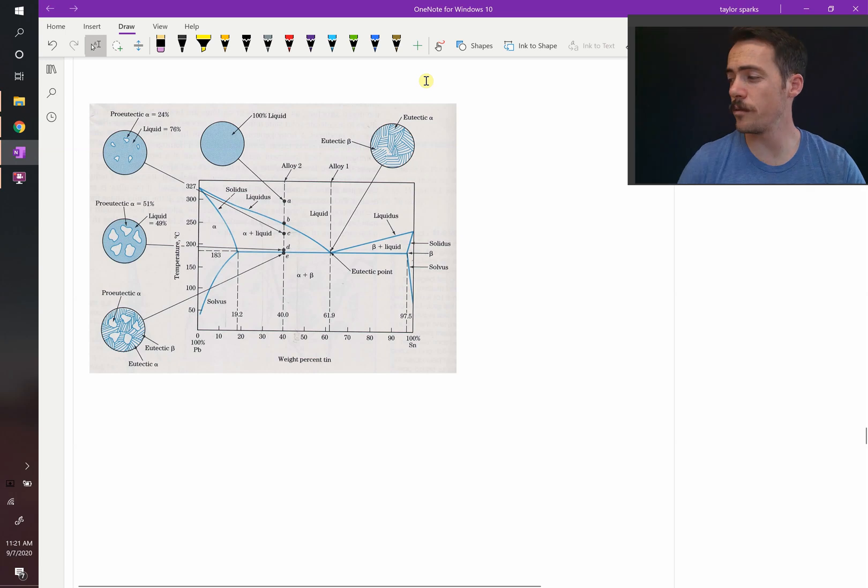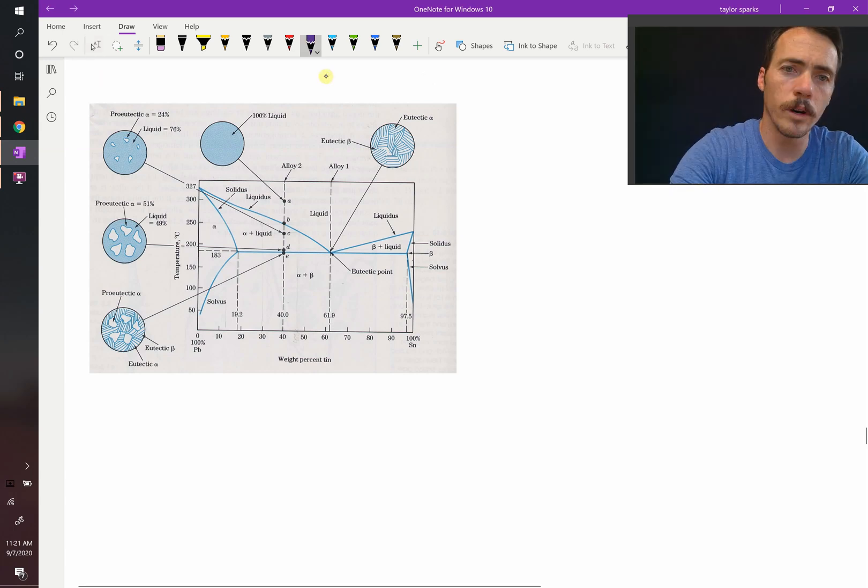Let's do another example of drawing the microstructure in a eutectic phase diagram as you cool it down from some composition. So let's take a look at alloy one. That's the one that we just did. Alloy one is right here.